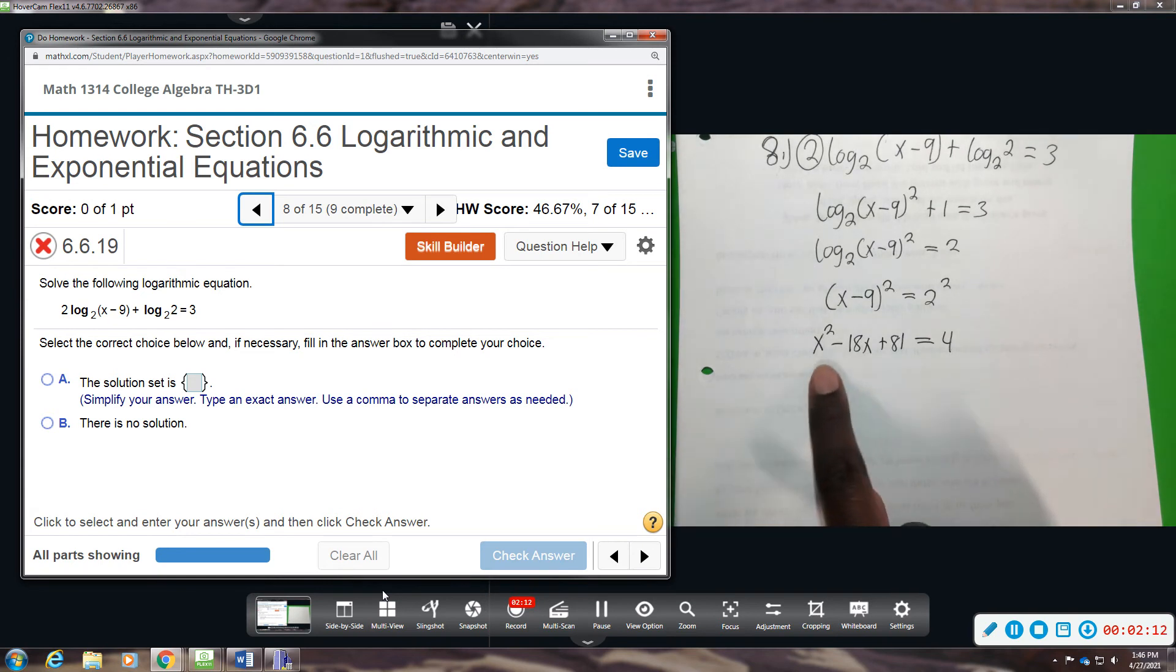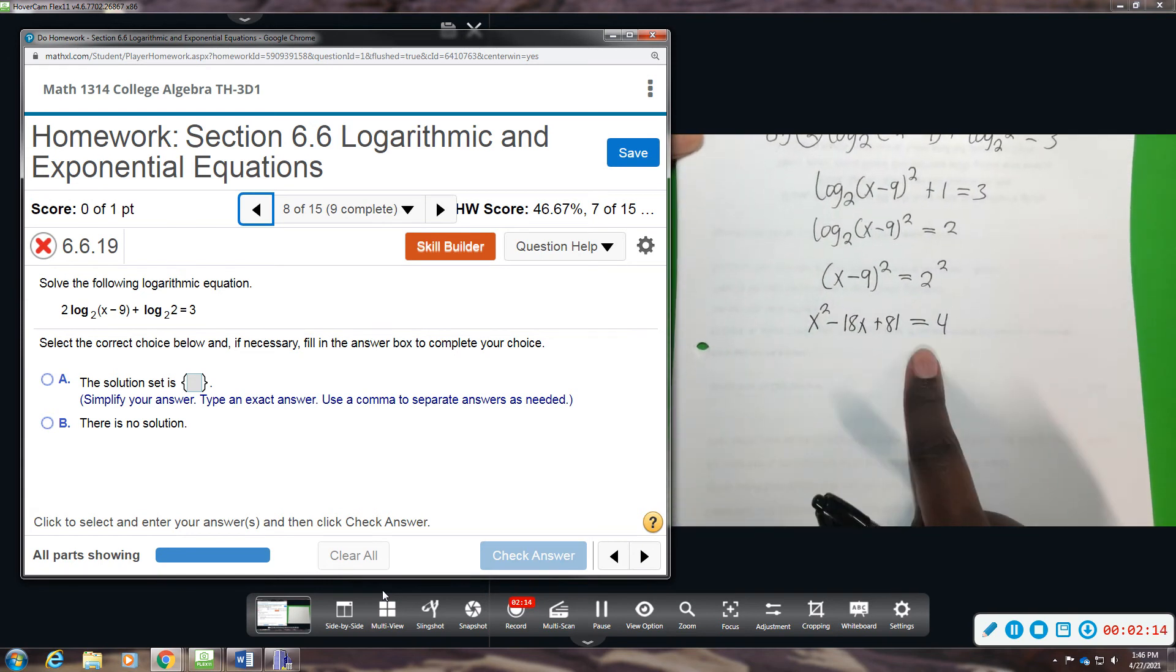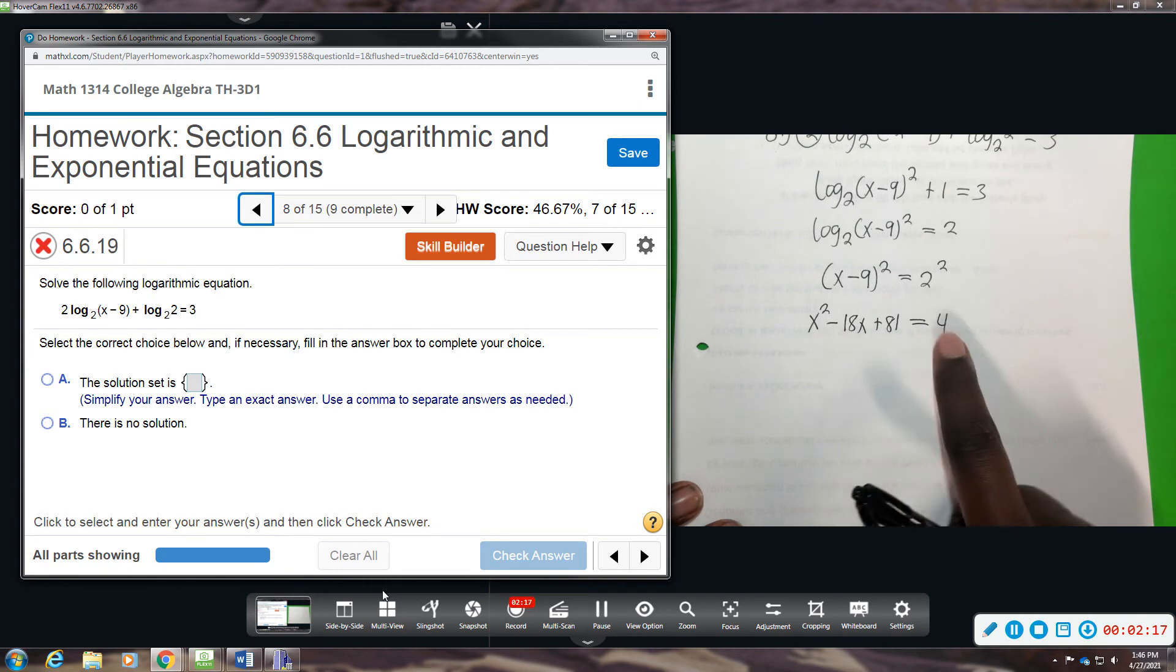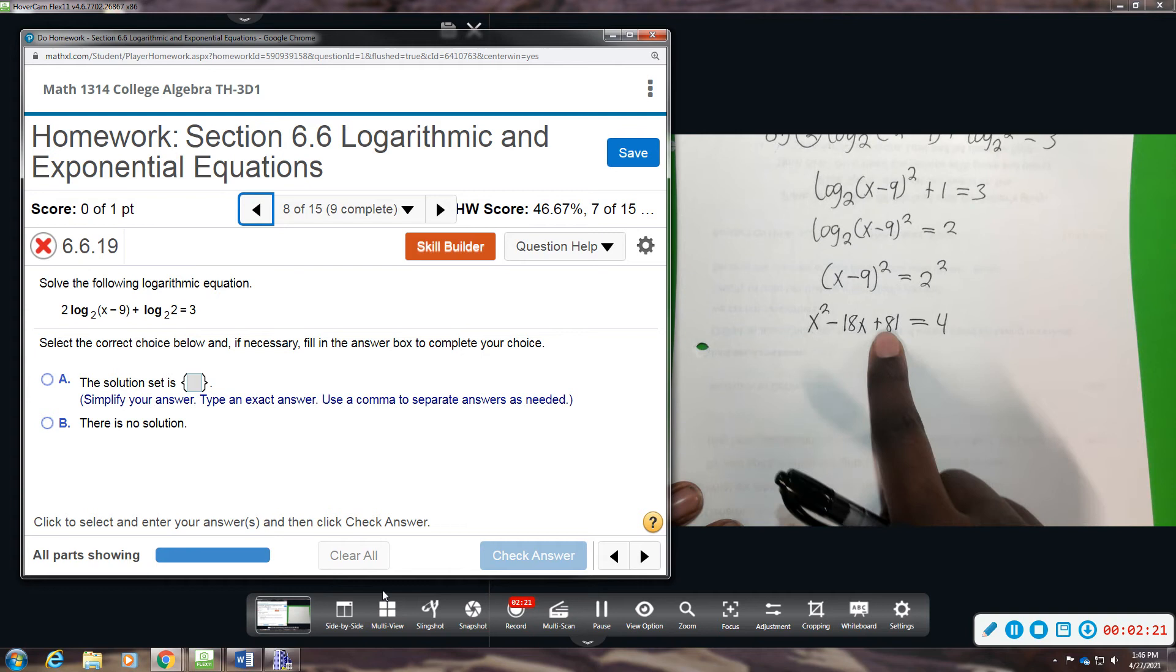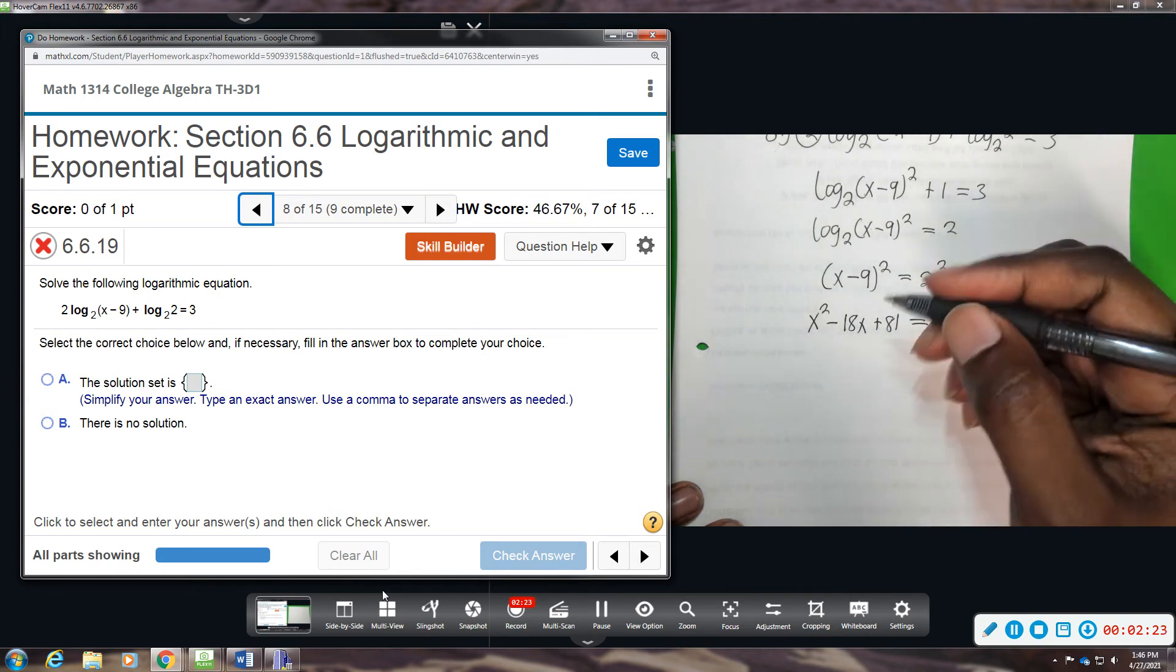All right, so here you should recognize quadratic expression. And so we go back to either quadratic formula or factoring. So we're going to set this side equal to 0 by subtracting 4 from both sides.